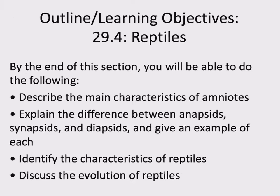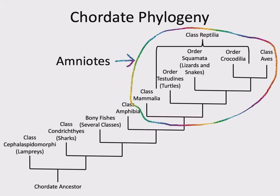Next we talk about reptiles, but before that, there is another clade that emerges. Tetrapoda included amphibians, mammals, reptiles, and birds. Now we have an evolutionary innovation shared by mammals, reptiles, and birds — a structure called the amnion. Members of this clade — mammals, reptiles, and birds — are called amniotes.